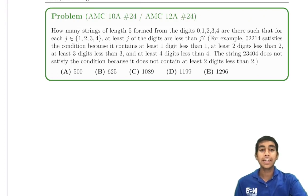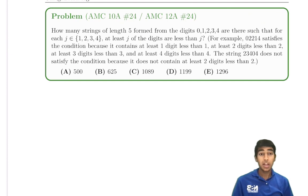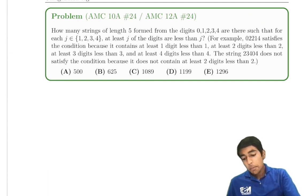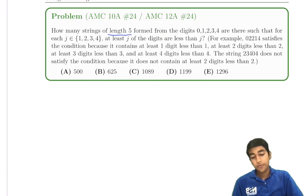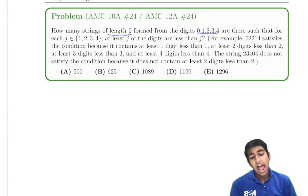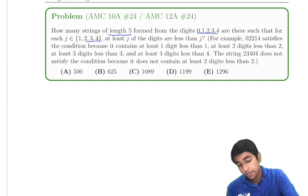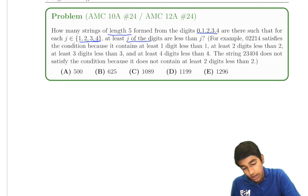Let's solve this interesting combinatorics problem from the AMC 10 and 12, number 24. How many strings of length 5 can be formed from the digits 0 through 4 such that for each j from 1 to 4, at least j of the digits are less than j?